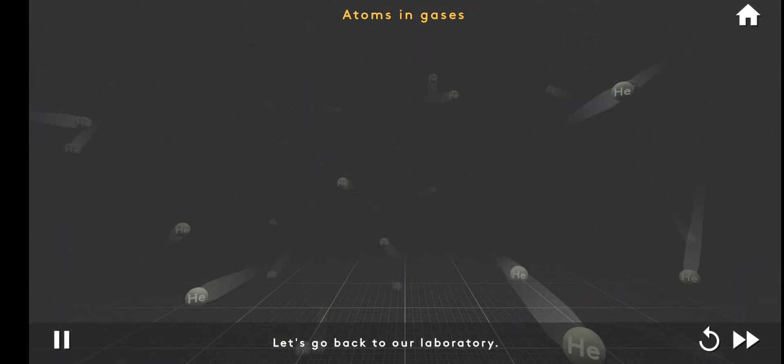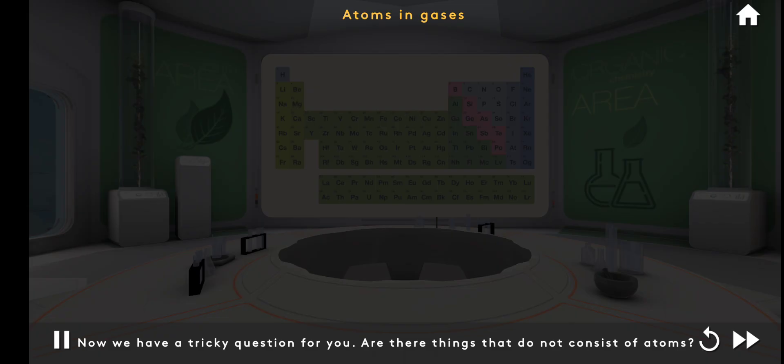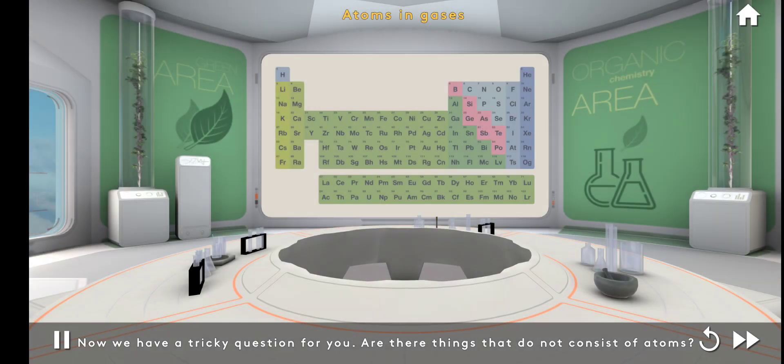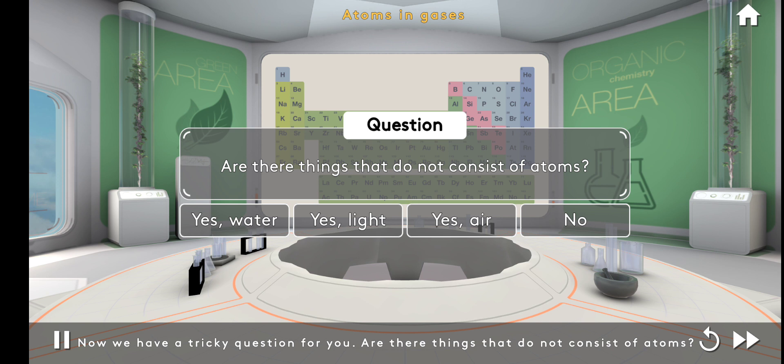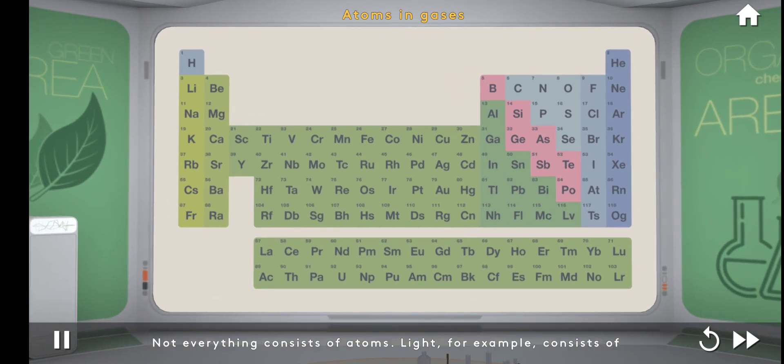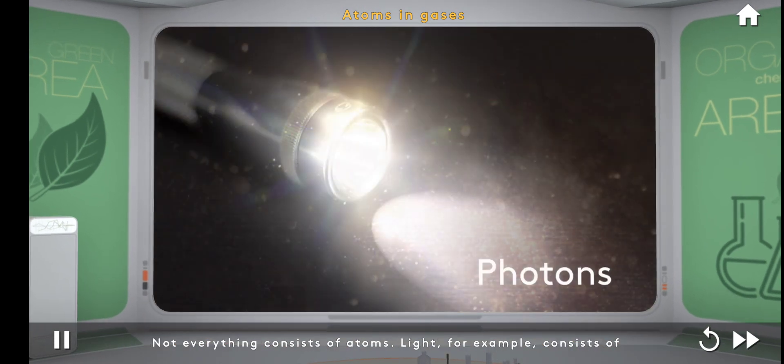Let's go back to our laboratory. Now we have a trick question for you. Are there things that do not consist of atoms? Not everything consists of atoms. Light, for example, consists of photons, which are different kinds of particles with different properties.